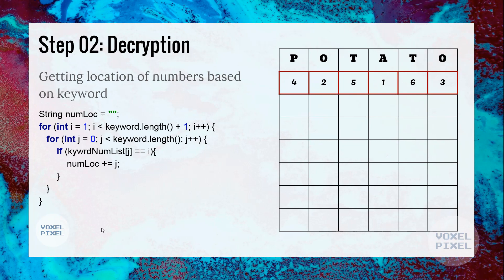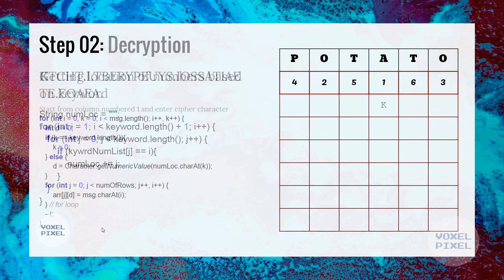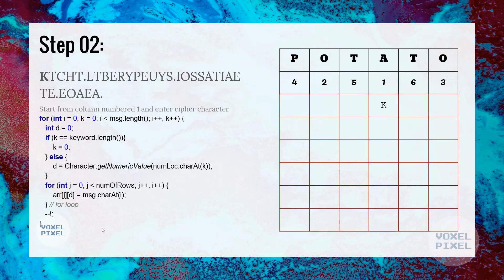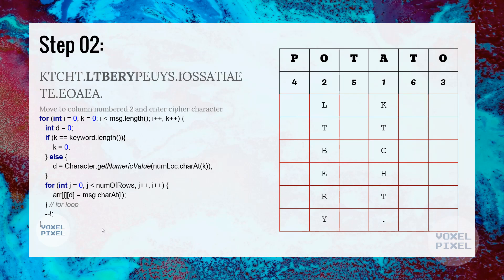First, we will get the location of numbers based on the keyword, as we did in encryption. Now, we will begin by column number 1, and putting ciphertext into the columns one by one. Under number 1, first letter K, followed by a T, then C, H, T, and dot. Then all the rows are filled. Next, we will move on to the column number 2, and we will put next letters. We will keep on doing this until entire grid is filled with the ciphertext.